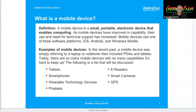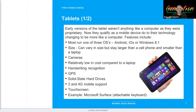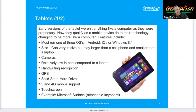Common mobile devices we'll be covering include tablets, smartphones, wearable technology, phablets, e-readers, smart cameras, and GPS, just to name a few. There are also certain ports proprietary to these devices depending on the actual device itself. iOS, Android, and Windows Mobile are the major three platforms these things run on. The variety of mobile devices is ever-expanding — nowadays there are so many we cannot even keep track.